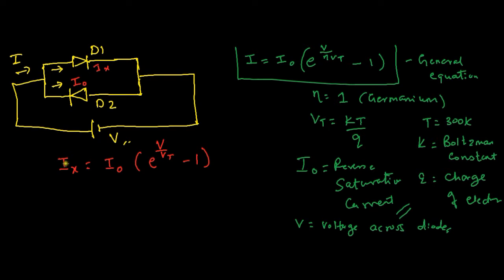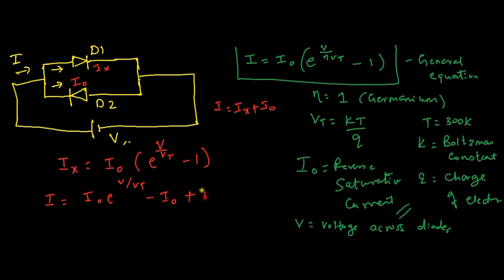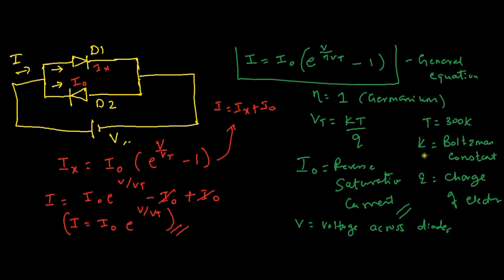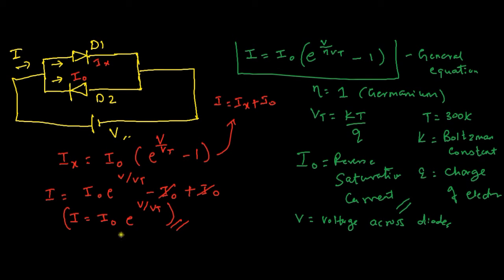So I = Ix + I₀. Replacing Ix: I = I₀ · e^(V/Vt) − I₀ + I₀. The −I₀ and +I₀ cancel, giving the final equation: I = I₀ · e^(V/Vt).